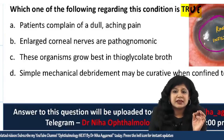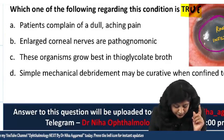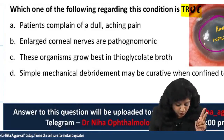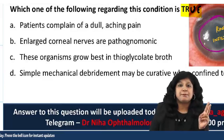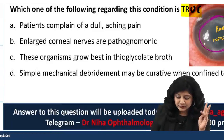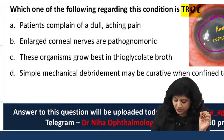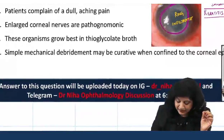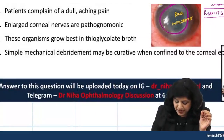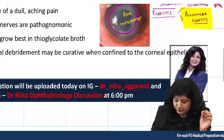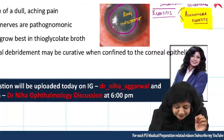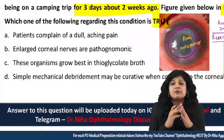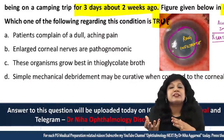Now let us look at the options. Option 1: patient complains of a dull aching pain. Option 2: enlarged corneal nerves are pathognomonic. Option 3: these organisms grow best in thioglycolate broth. Option 4: simple mechanical debridement may be curative when confined to the corneal epithelium. You have to find which statement is true.